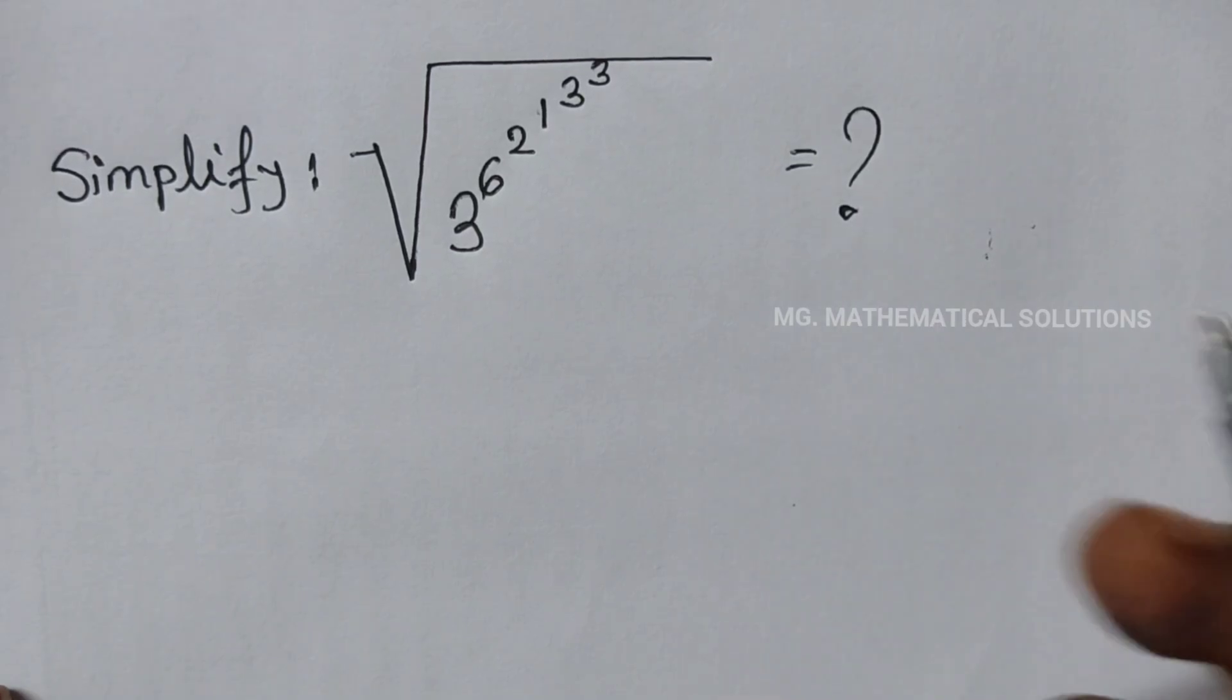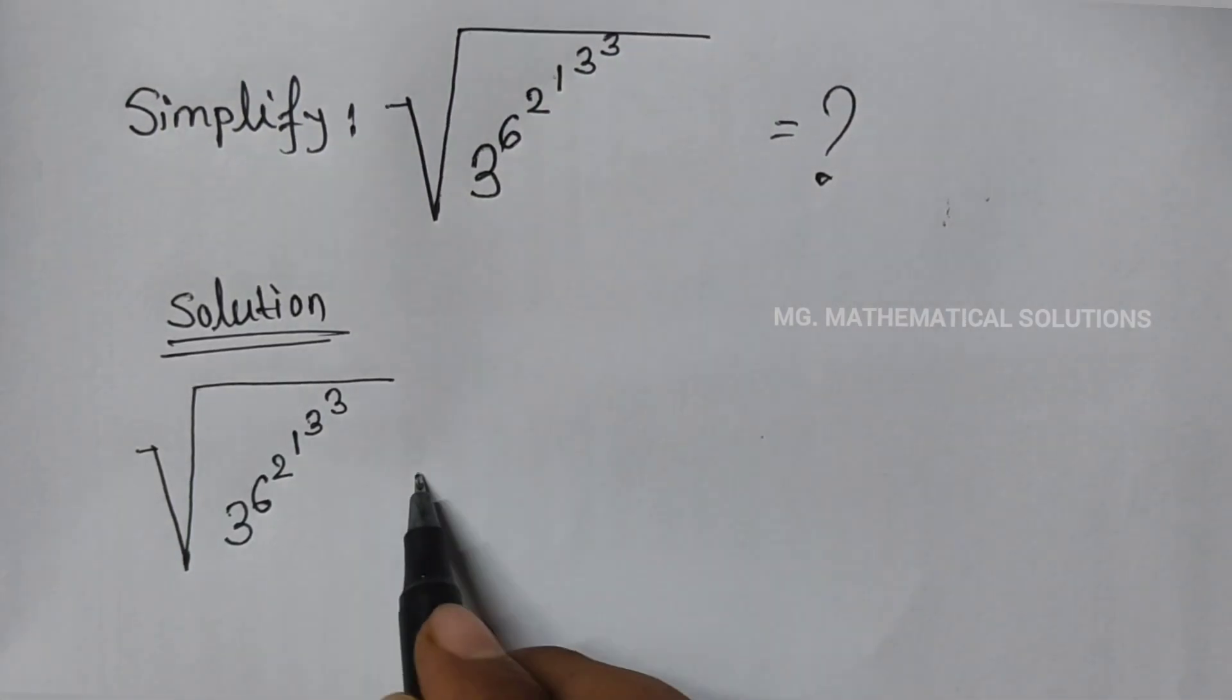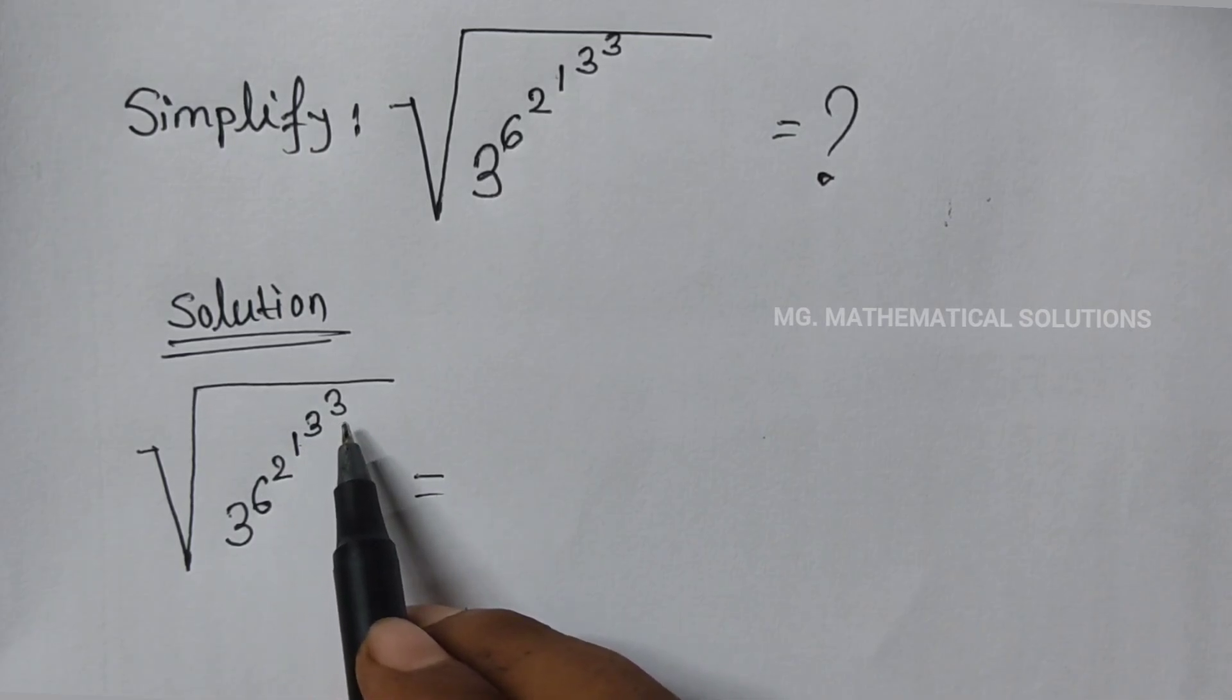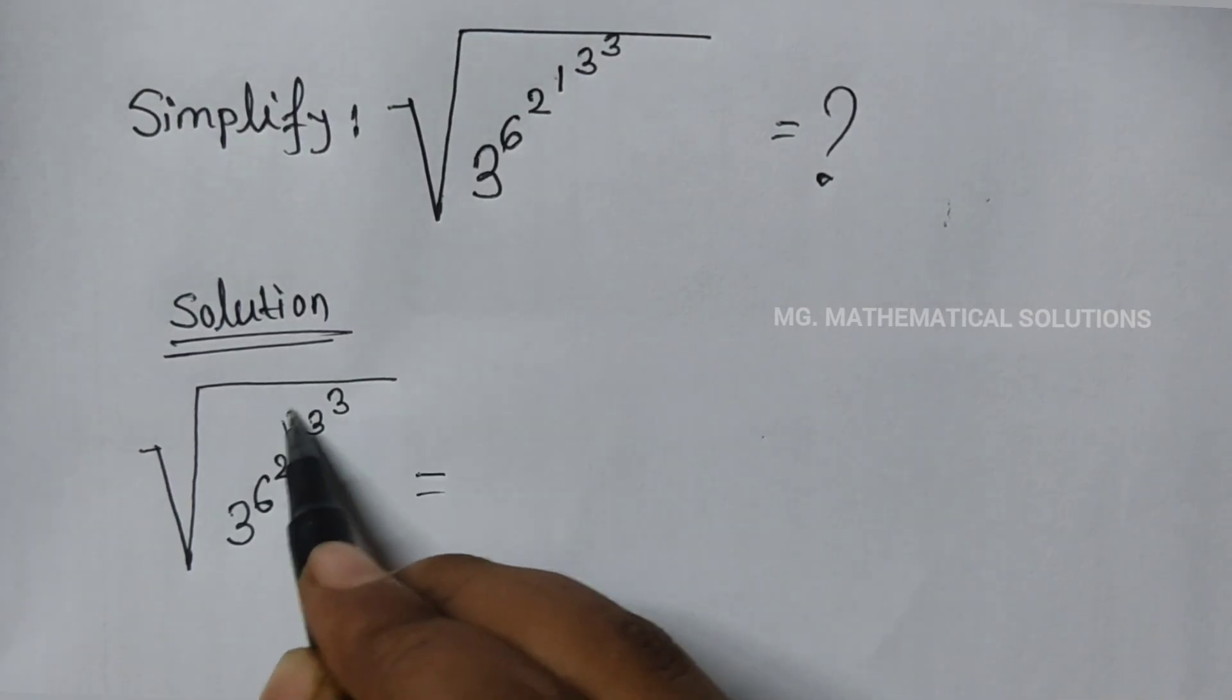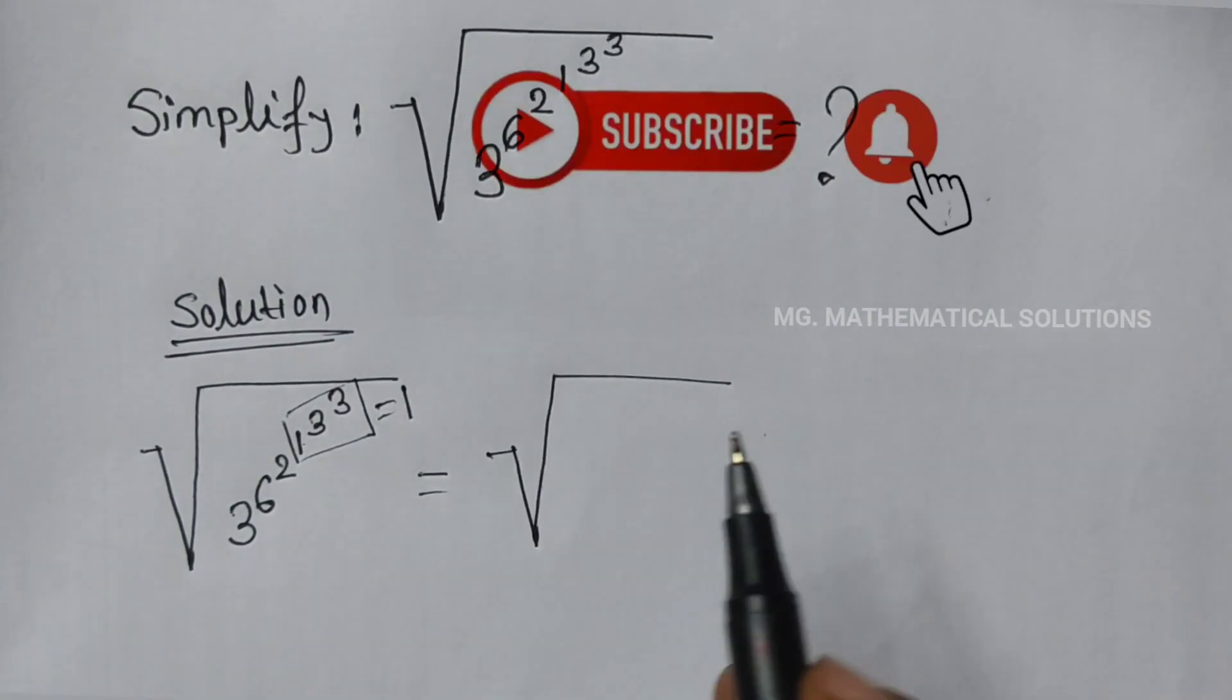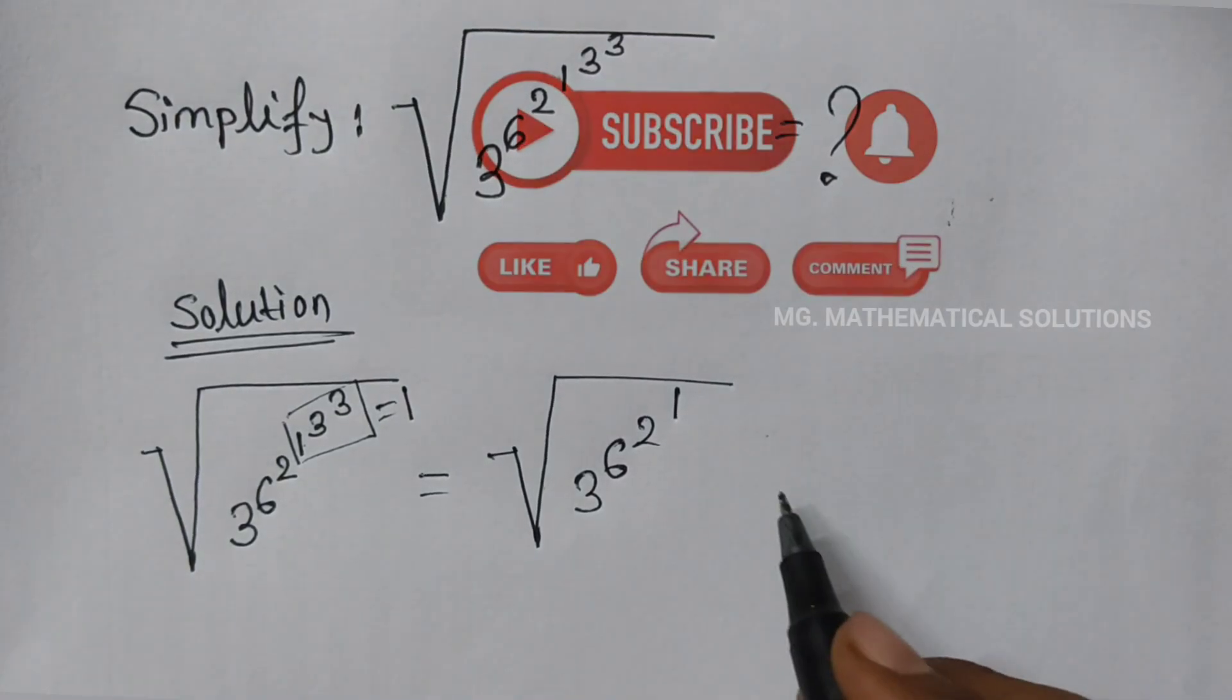Let's see the solution. We know 1 to the power infinity equals 1, so this term equals 1. Root over 3 to the power 6 to the power 1...